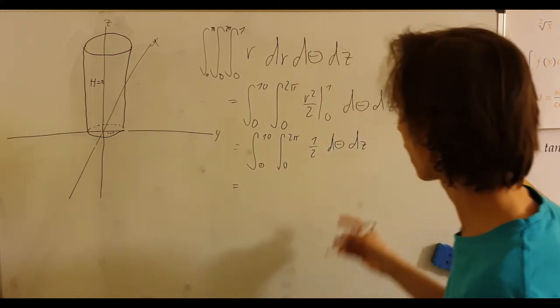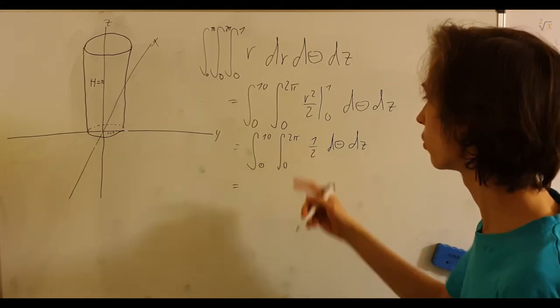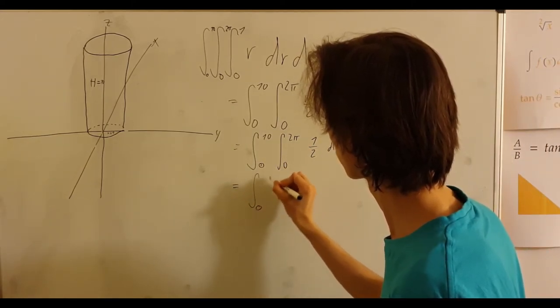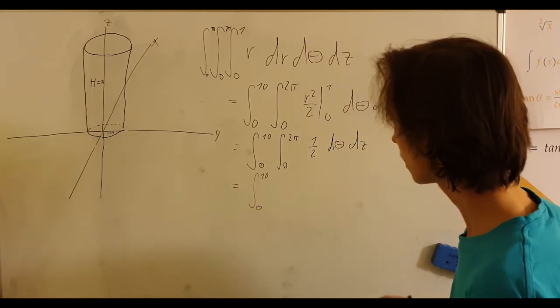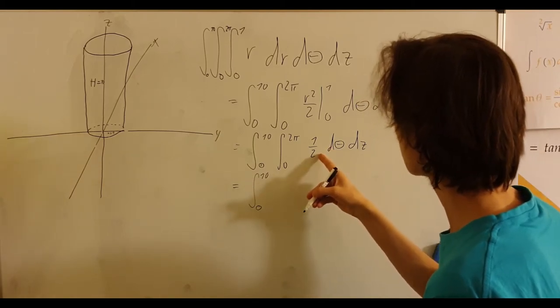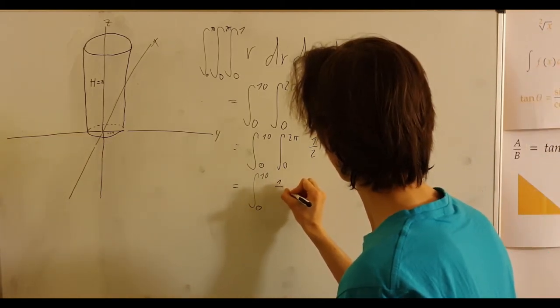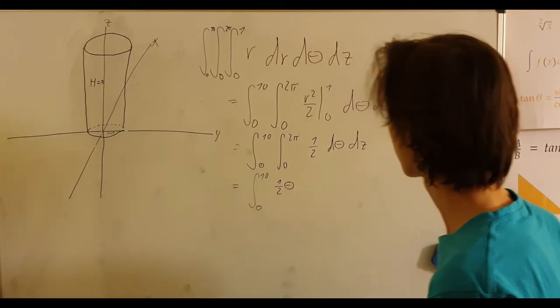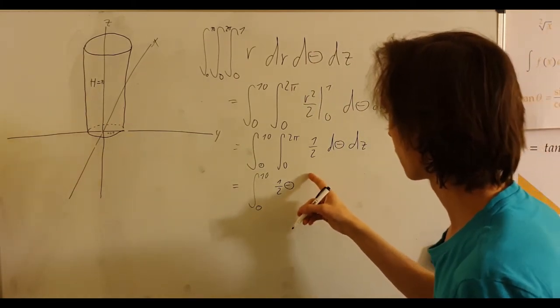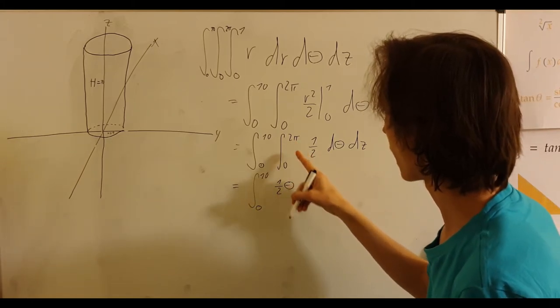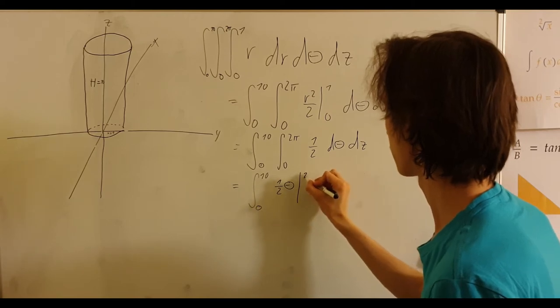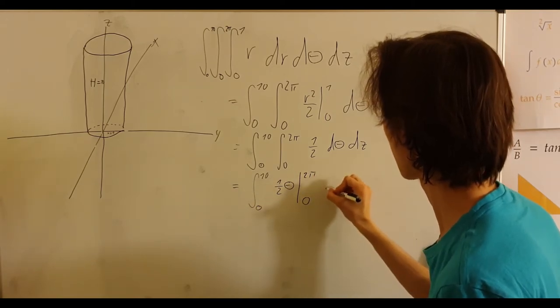And this will be equal to... And now we will integrate the middle one. Keep the outer one from 0 to 10. This is the height of z. Then 0 to 2 pi, and we're taking it in respect to theta. So we're doing 1 half theta. And now we are plugging in 2 pi and 0. Let's plug it in, and then dz.